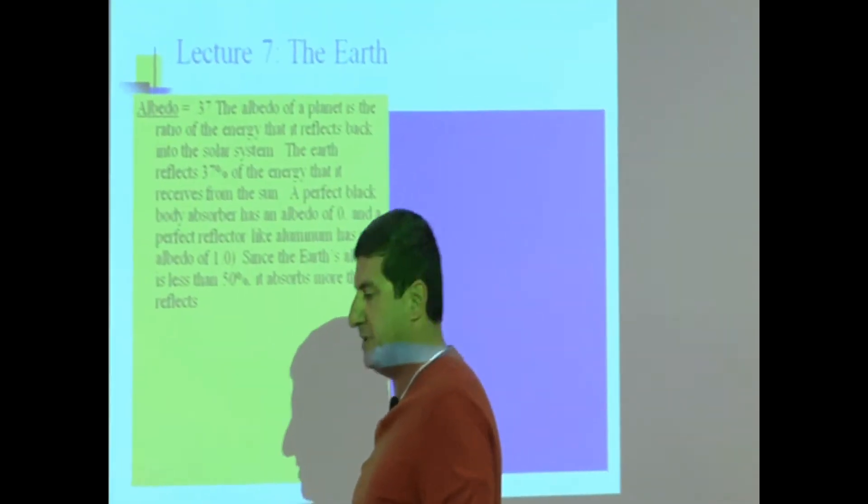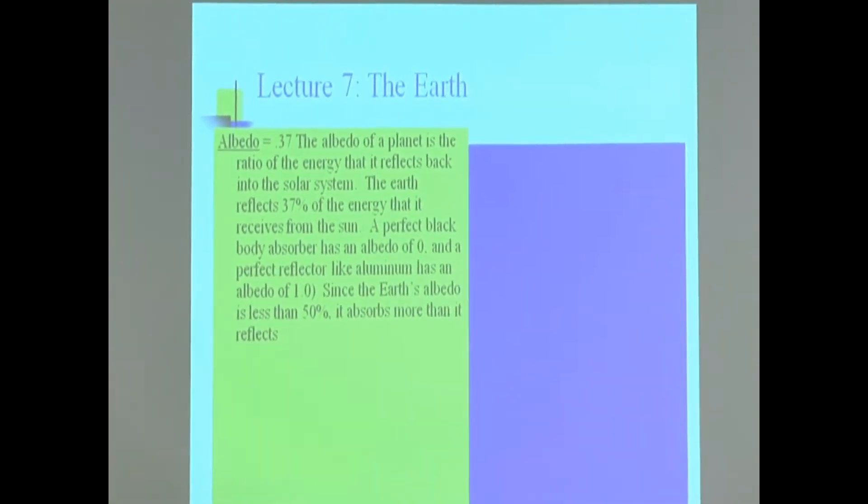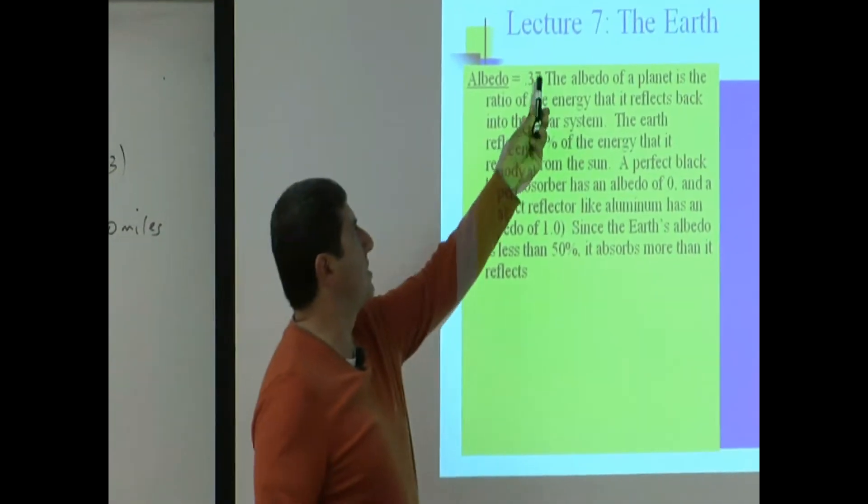Okay, the other thing: albedo. Albedo of the Earth is roughly 0.37.